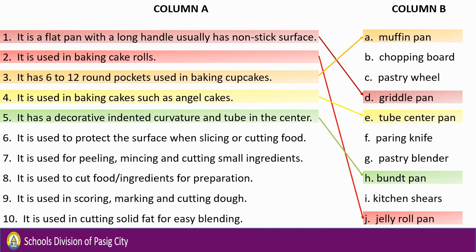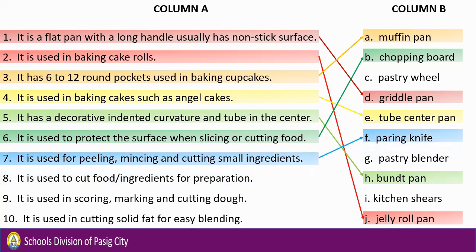Number 6: It is used to protect the surface when slicing or cutting food. Letter B — Chopping Board. Number 7: It is used for peeling, mincing, and cutting small ingredients. Letter F — Paring Knife.